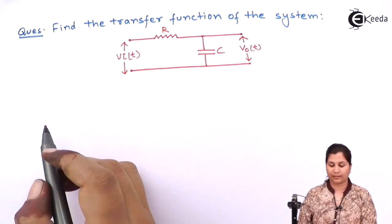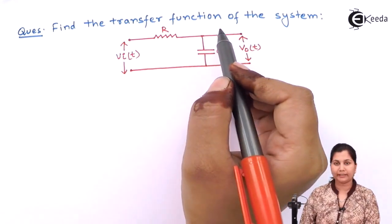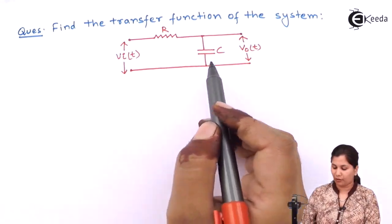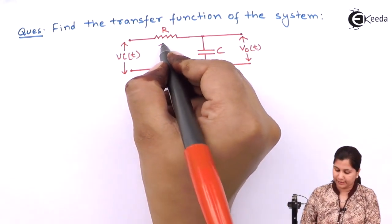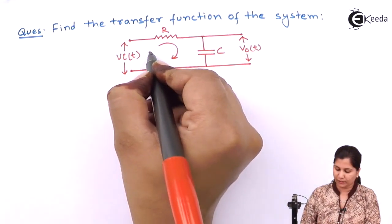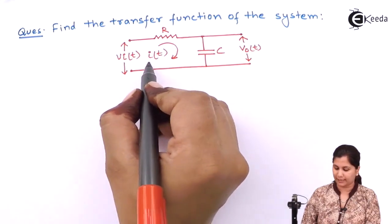This is the question and we have to find out the transfer function of the system. The circuit is given to us, and this is the current flowing in the circuit that is IT.